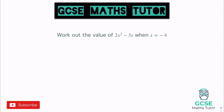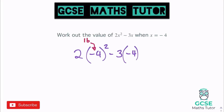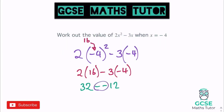Final question: work out the value of 2x² − 3x when x is negative 4. We have 2 lots of negative 4 squared, take away 3 lots of negative 4. Negative 4 squared is 16, so rewriting: 2 lots of 16 take away 3 lots of negative 4. 2 lots of 16 is 32; 3 lots of negative 4 is negative 12, and taking away a negative gives a plus. So 32 plus 12 equals 44.